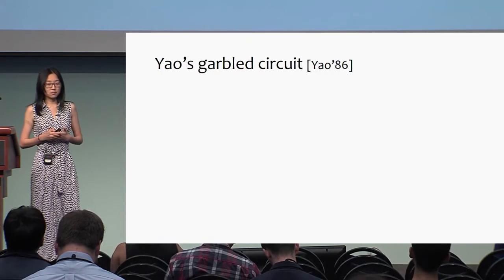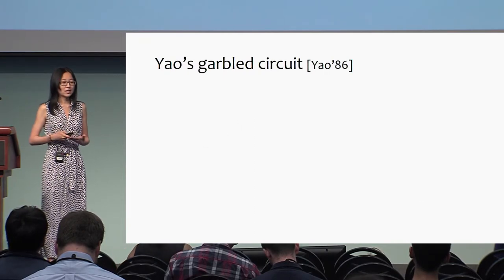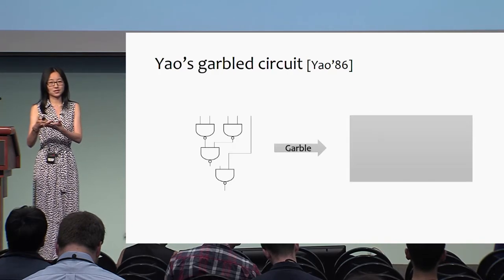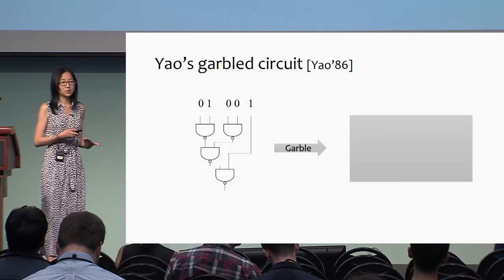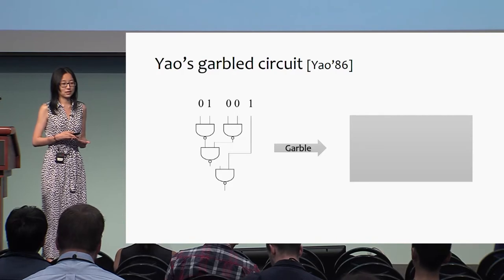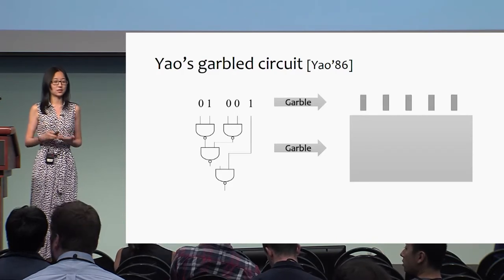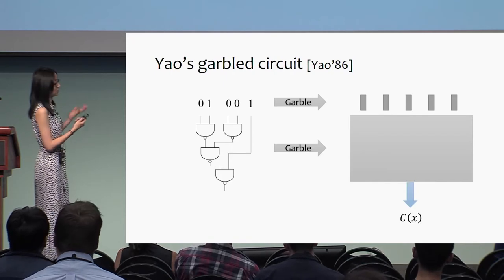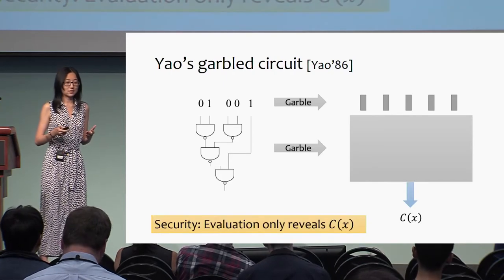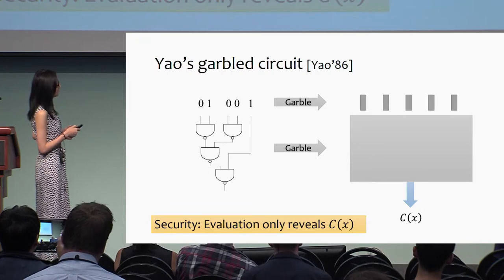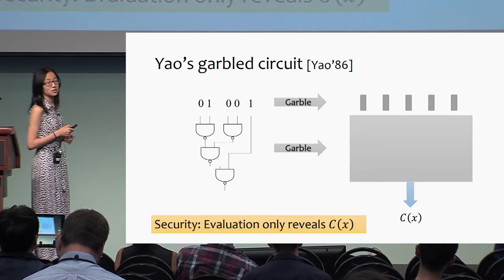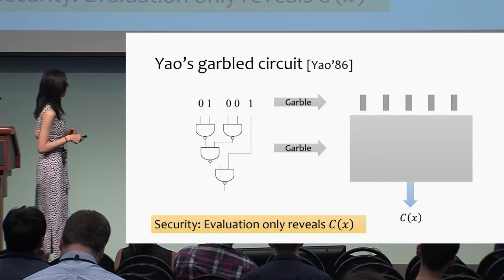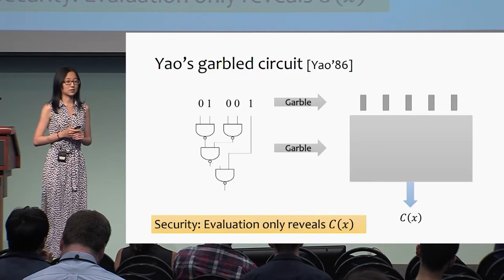The first building block is Yao's garbled circuit. At a very high level, it takes an arbitrary Boolean circuit and garbles it into a garbled circuit. You can evaluate this garbled circuit and figure out the output. The security guarantee is that the only thing you can learn from this evaluation is the output — nothing about the circuit, nothing about the input. This is Yao's garbled circuit.